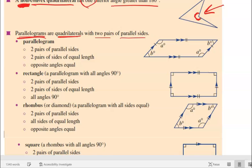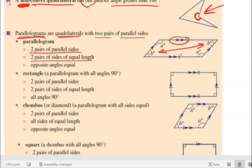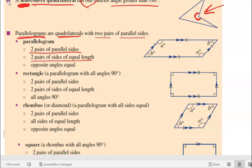A parallelogram has two pairs of parallel sides of equal length, and the opposite angles are equal. The arrows on the diagram indicate which lines are parallel to each other, and the slash marks indicate sides of equal length. So the opposite angles are going to be equal to each other — that's the joy of a parallelogram, with parallel sides on an angle like that.